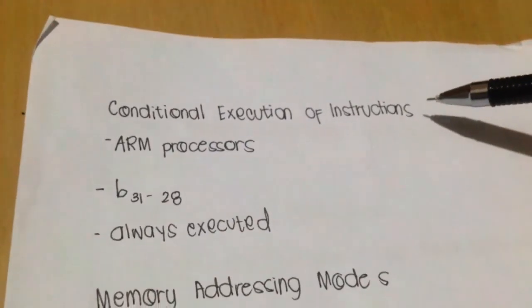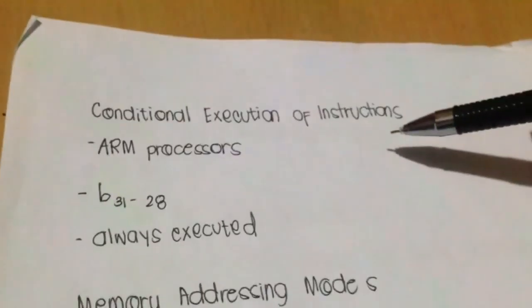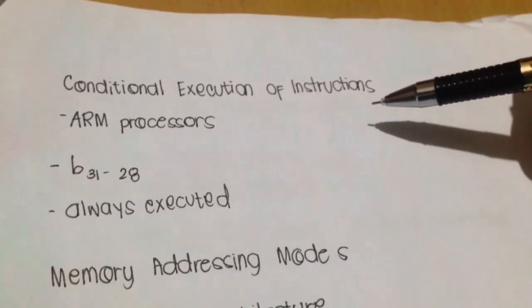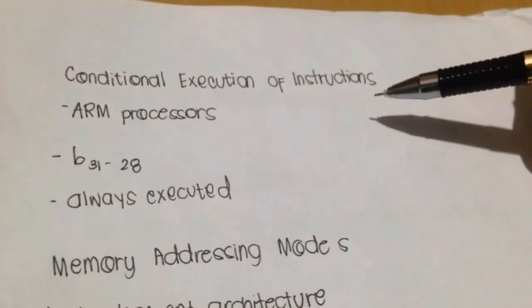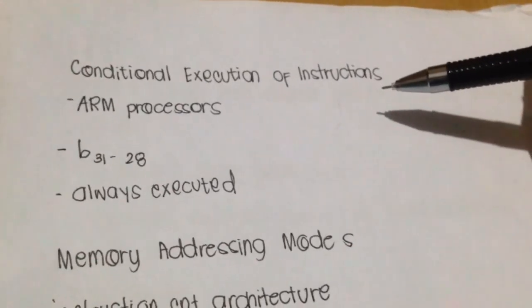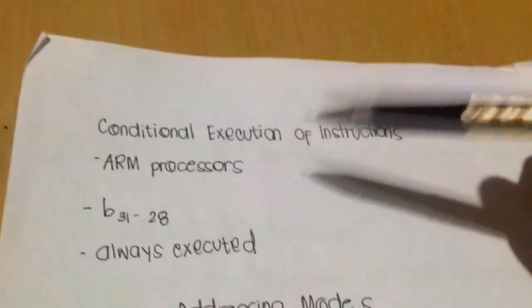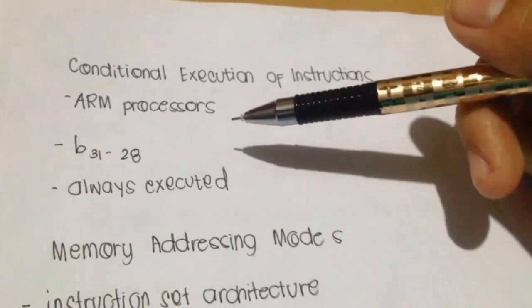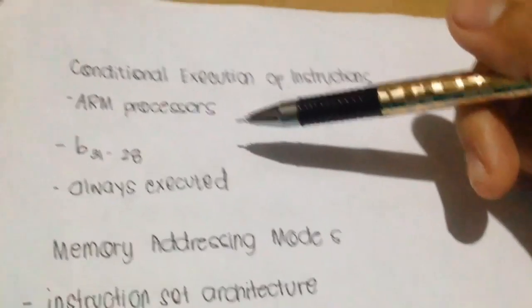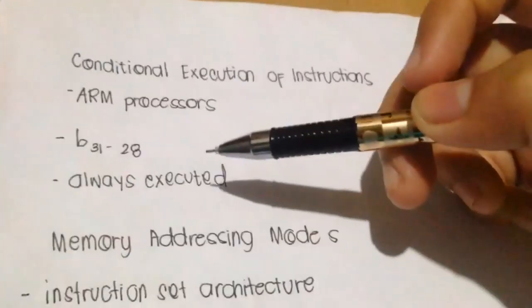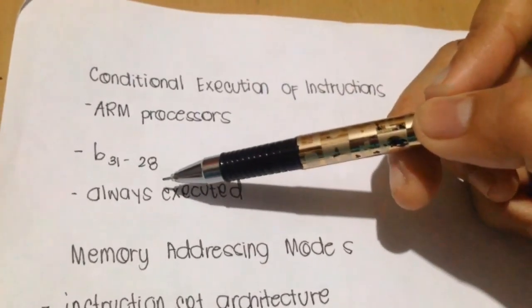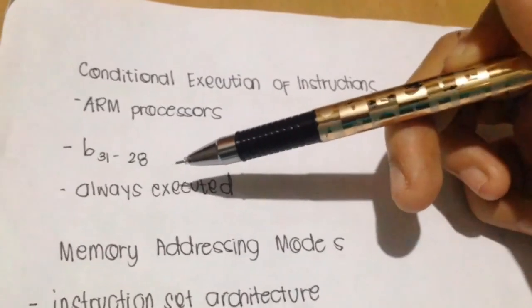Conditional execution of instruction. A distinctive and somewhat unusual feature of ARM processor is that all instructions are conditionally executed depending on the conditions specified in the instruction. The instruction is executed only if the current state of the processor condition code flag satisfies the condition specified in bits B31 to B28 of instruction.